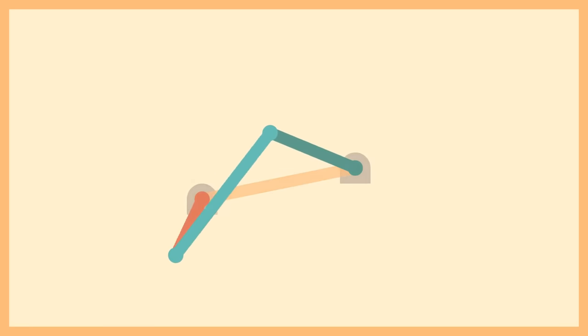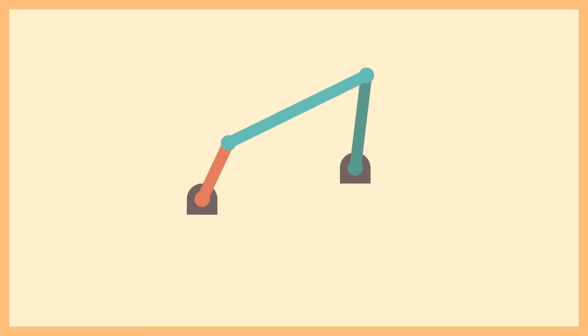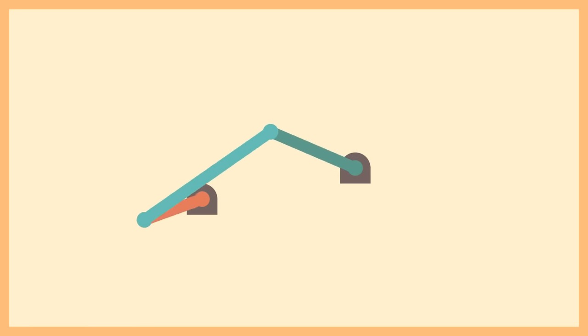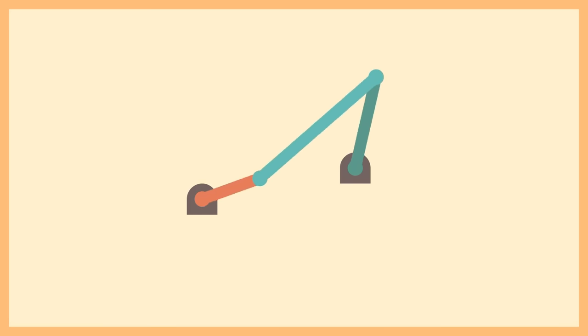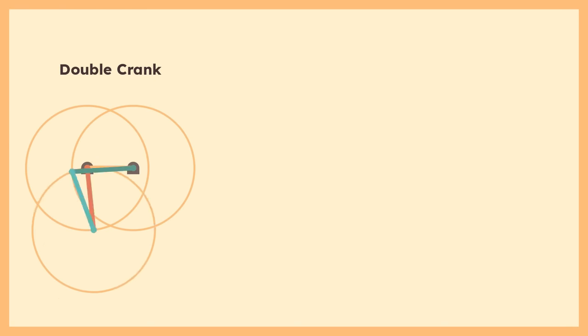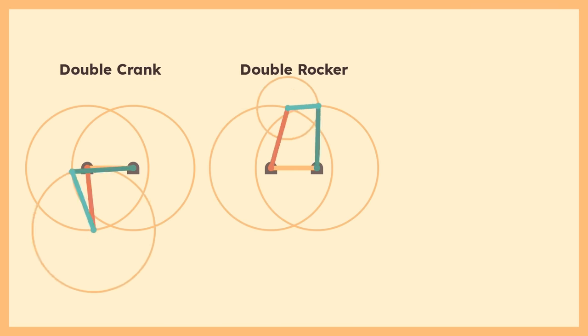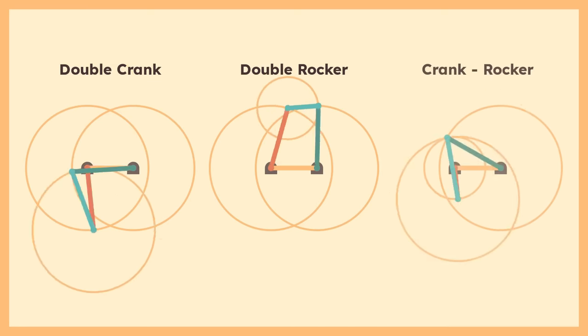The four-bar linkage is one of the most common types of mechanisms. It is composed of an input or driver link, an output or driven link, and a coupler link connecting these two. The fourth link is assumed to be the ground or static link. The ratio between the lengths of the links and their arrangement can produce three main types of movement: a double crank, where both input and output links can fully rotate; a double rocker, where neither can fully rotate; and a crank rocker, where only the input link can fully rotate. In a double crank linkage, the shortest link is the fixed link; in a double rocker, the shortest link is the coupler; and in a crank rocker, the shortest link is the input link.